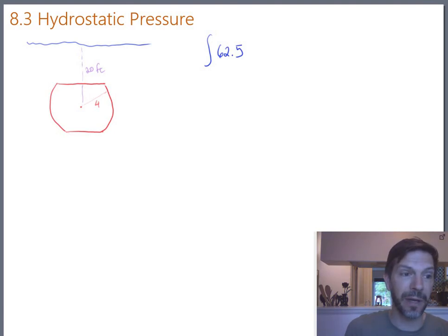And pretty much every time so far, we've set up the coordinate system so that x measures depth. And we could do that again. But I am going to say for the equation of a circle, it's really nice if that circle is centered on the origin. Because then the equation is just x squared plus y squared equals r squared.